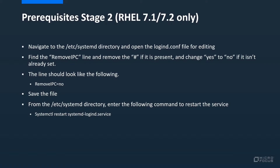The second stage of prerequisites only applies to Red Hat or CentOS 7.1 or 7.2. To do this, please follow the steps on the screen to effectively remove the hash from the RemoveIPC line within the logind.conf config file and ensure that it's set to no. When you've completed the commands, make sure you restart the service by running the command shown at the bottom of the slide.